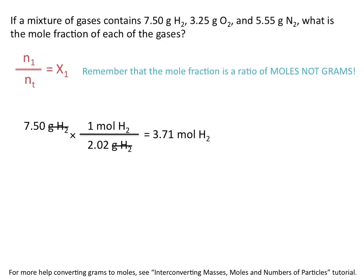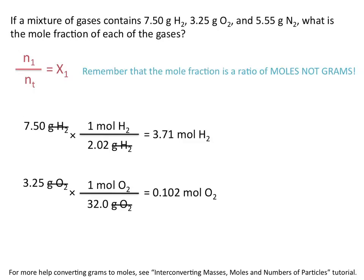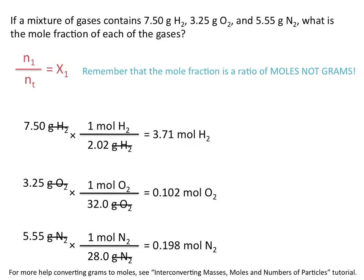This tells us that 7.5 grams of H2 is equal to 3.71 moles of H2. We'll do the same for oxygen — converting to moles using the molar mass of O2, which gives us 0.102 moles of O2. And we'll do the same thing for nitrogen using the molar mass of N2, calculating that 5.55 grams of N2 are equal to 0.198 moles of N2.